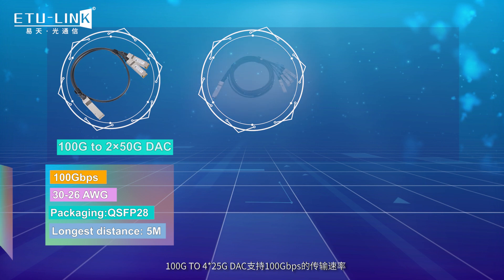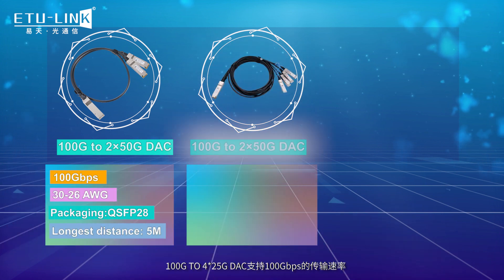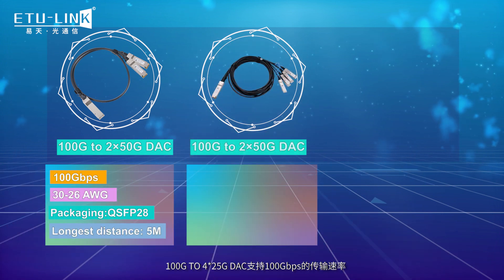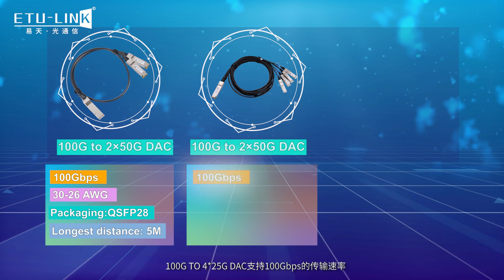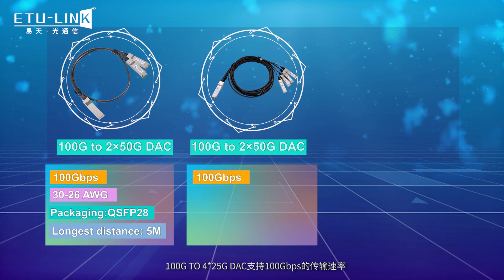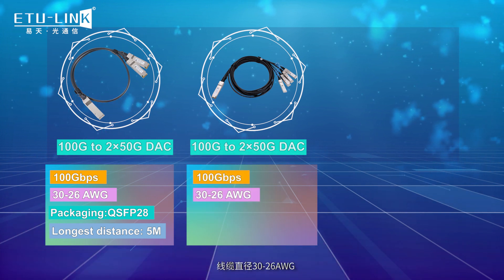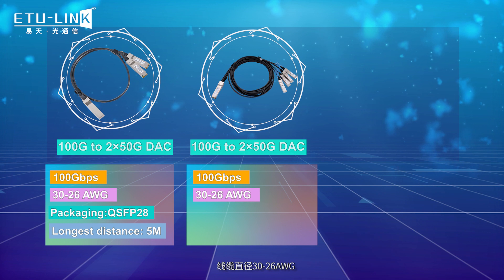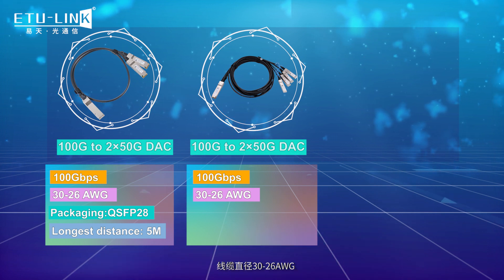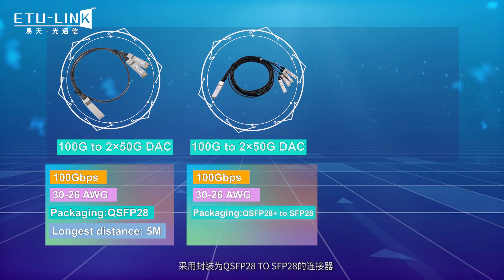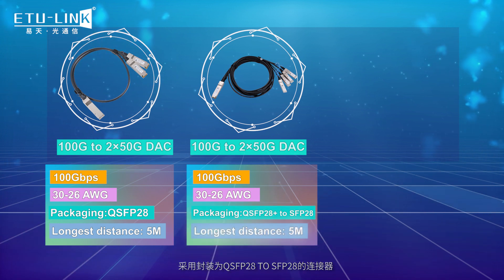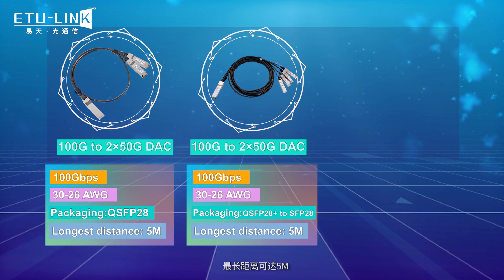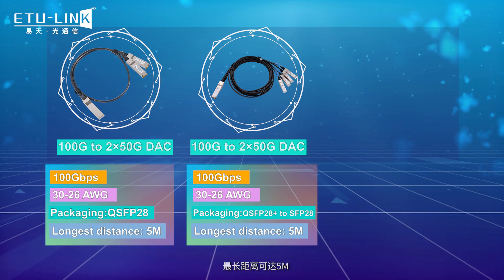The 100 Gb to 4x25 Gb DAC supports a transmission rate of 100 Gb. The cable diameter is 30 to 26 AWG, the packing form is QSFP28 to SFP28, and the longest distance can reach 5 m.